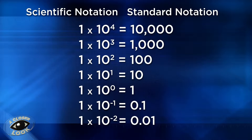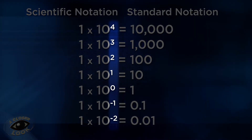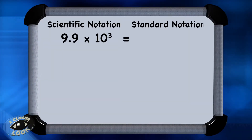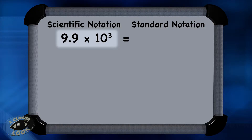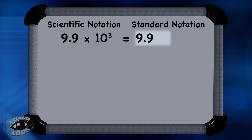When converting from scientific notation to standard notation, use the exponent as a guide, which will tell you how many places to move the decimal. In the first example, you have 9.9 times 10 to the third power. To convert that to standard notation, when there is a positive exponent like this one, you move the decimal to the right. Since there is a value of 3 from the positive exponent, the decimal will move to the right 3 places. So take the decimal and move it 1, 2, 3 places, and fill in the other spots with zeros. So 9.9 times 10 to the third power is the same thing as 9,900.